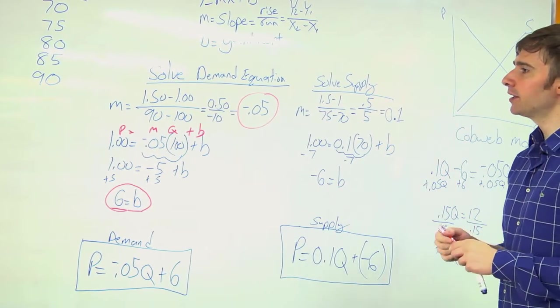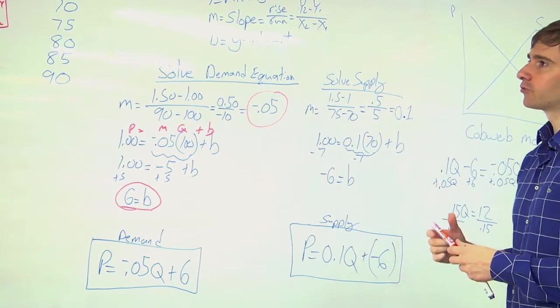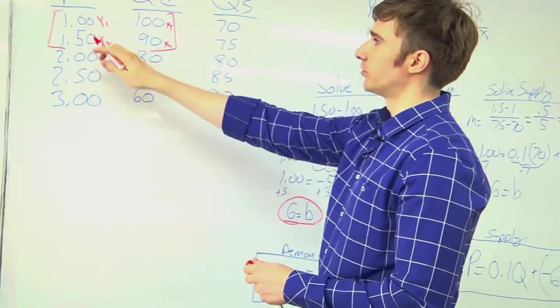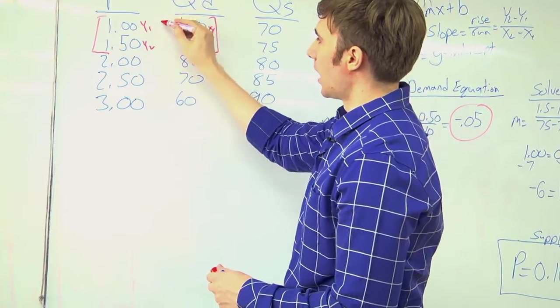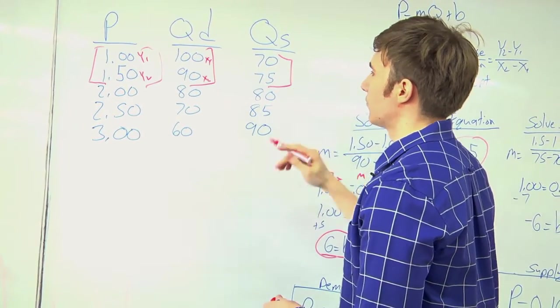So here's my supply equation. Again, step one, solve for m. So pick any two points. So I'm going to use a dollar, a dollar 50, and I'm going to use the 70 and 75.